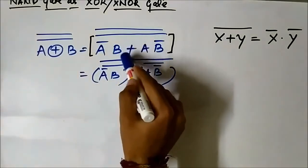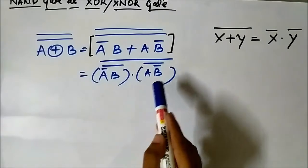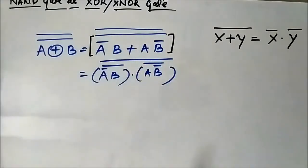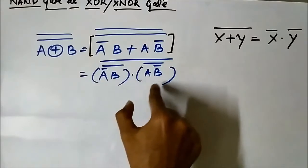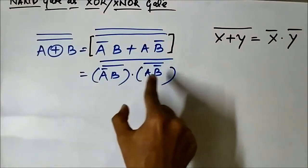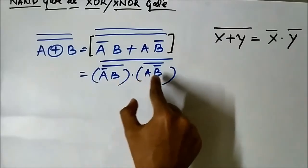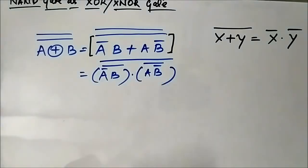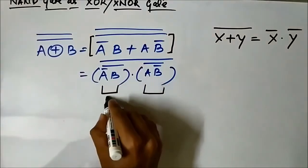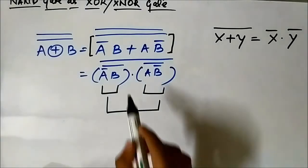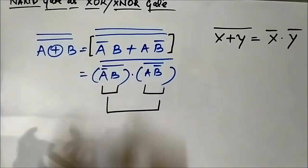But if we convert this OR into an AND-type expression, we can easily design the XOR gate and XNOR gate using NAND gate. Because NAND gate is all about AND — it's all about multiplication, it's just the complement of AND. Here you see all the terms that are present — they are in product form. A̅B and AB̅ — these terms are in product form, in AND form. So this expression can be easily designed using NAND gate.